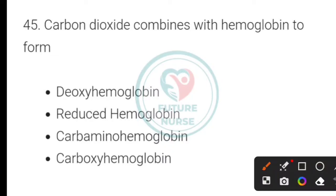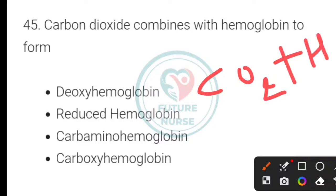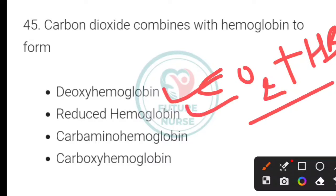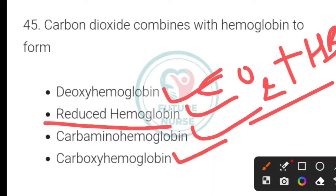Carbon dioxide combines with hemoglobin to form what? When CO2 combines with hemoglobin, the options are: deoxyhemoglobin, reduced hemoglobin, carboxyhemoglobin, or carbaminohemoglobin. The correct answer is carbaminohemoglobin.